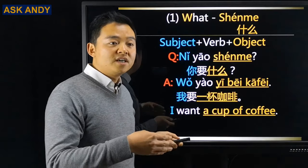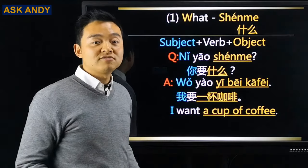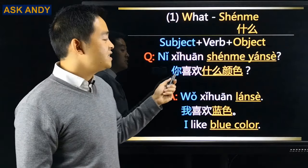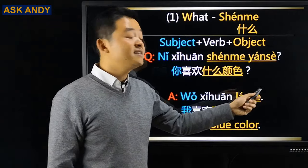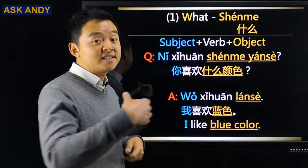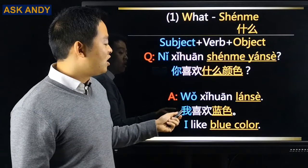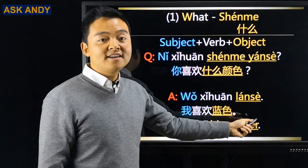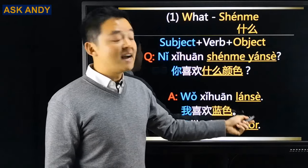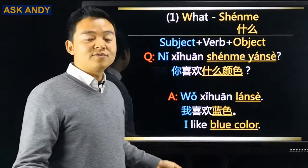Quote and replace the question word with new information. 你喜欢什么颜色? → 我喜欢蓝色 (I like blue). It's easy!